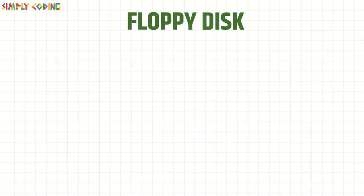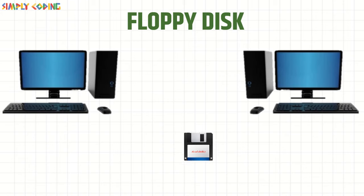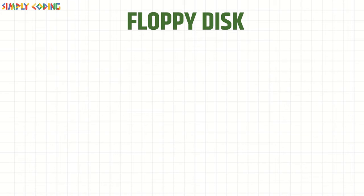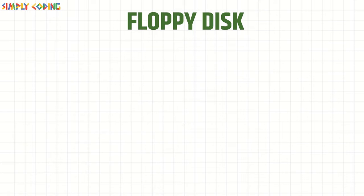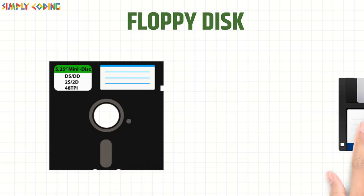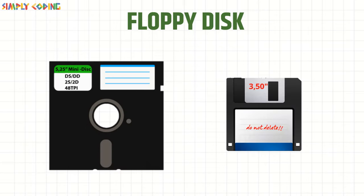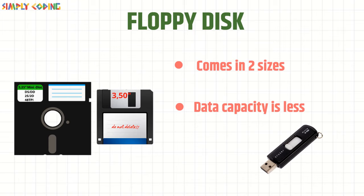Floppy disks were used to transfer data between computers. Computers have floppy drives into which the floppy was inserted. They used to come in 5¼ inch or 3½ inch size. As their data capacity was very less, pen drives have now become more popular.